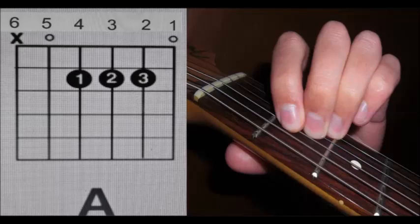There is an X over the sixth string. That means you don't play that. You play from the fifth string down. When you get your chord formed, play one string at a time like this.